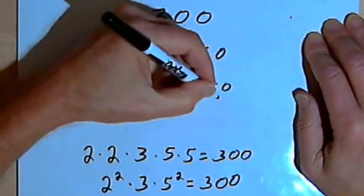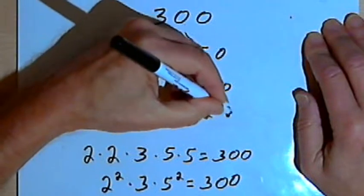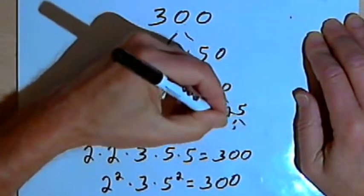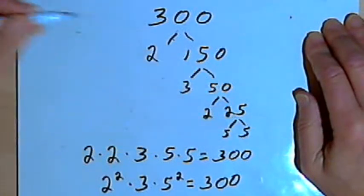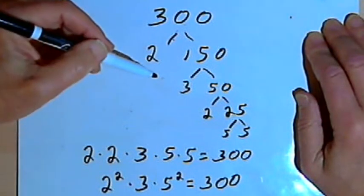3 times 50 is 150. 3 is prime, but 50 is not. So I could divide that into 2 times 25. And then the 25 would be broken down into a 5 and a 5. So this tree looks different than the first one I did.